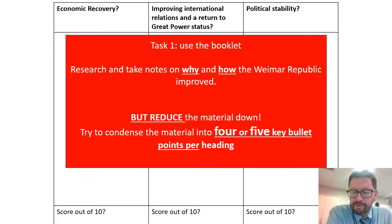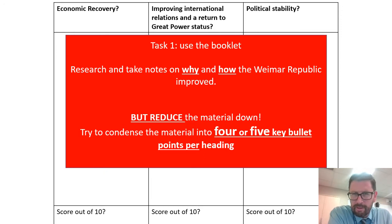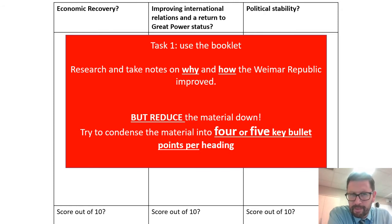So to assess the extent of German recovery after 1923, now we know just how low the country had got, we need to produce a table. It has three columns: the first column is economic recovery, the middle column is how Germany goes about improving its international status, and the final column is how the Weimar Republic tries to recover its political stability. We'll focus first on the economic recovery column.